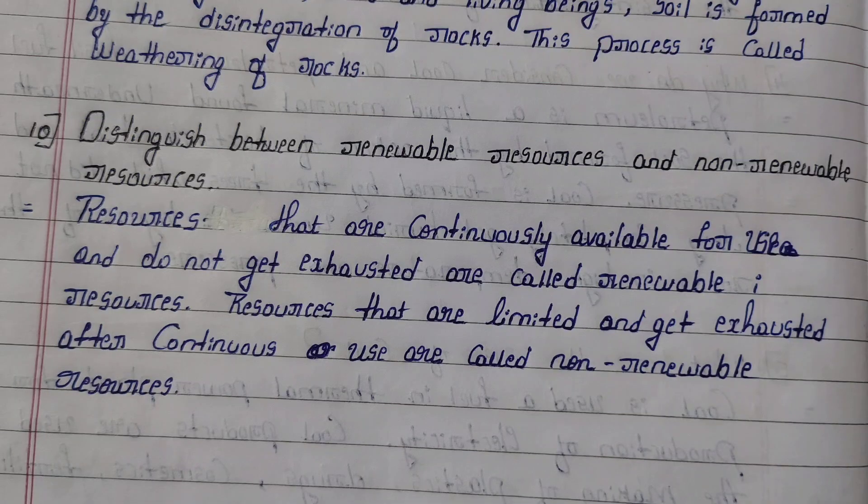Tenth question: Distinguish between renewable resources and non-renewable resources. Answer: Resources that are continuously available for use and do not get exhausted are called renewable resources. Resources that are limited and get exhausted after continuous use are called non-renewable resources.